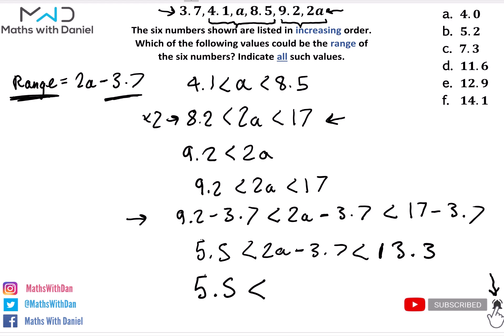Now this is the easy bit. Out of the numbers given to us in our answer, which of these is in between that range? You can clearly see that 7.3, 11.6, and 12.9 fall within the range. So the answer to our question is C, D, and E, and you're finished.